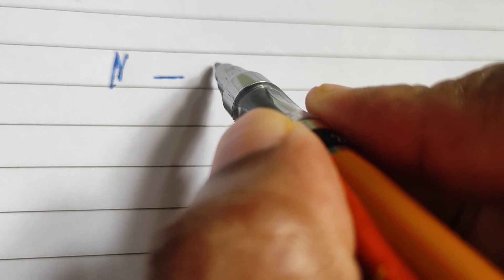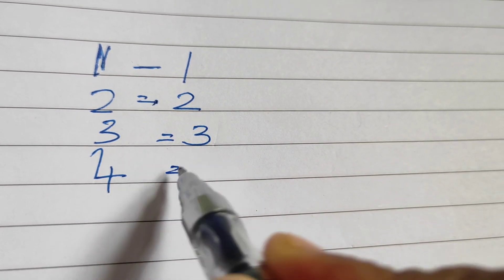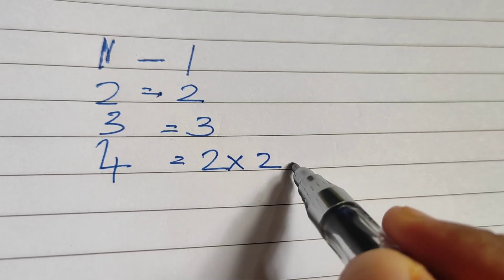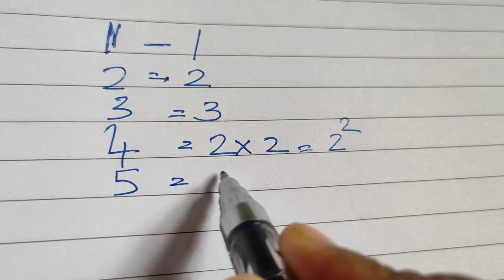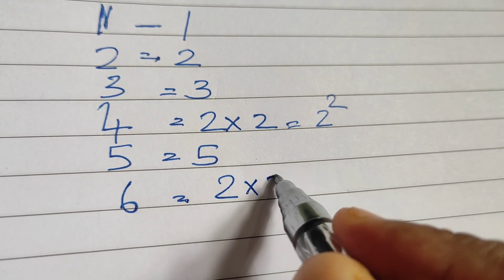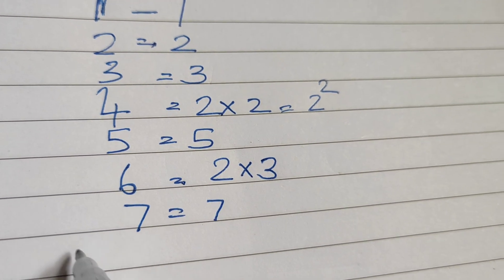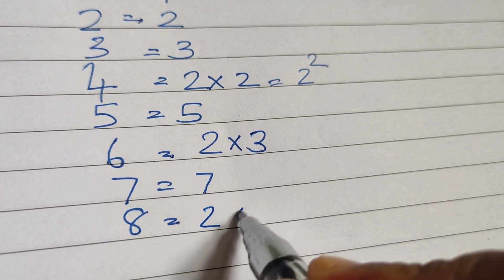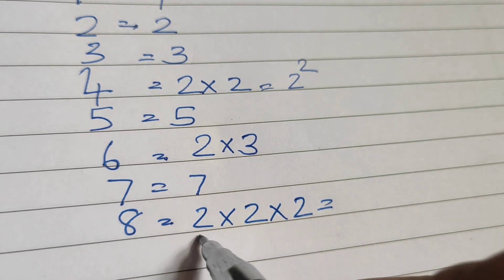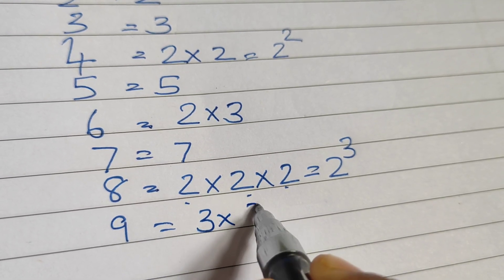Let's write the numbers. 1 is not a prime number. 2 is a prime number. 3 is a prime number. 4 we want to write as 2 into 2, which equals 2 squared. 5 is a prime number. 6 equals 2 into 3. 7 is a prime number. 8 equals 2 into 2 into 2, which is 2 raised to 3. 9 is 3 into 3, that is 3 squared.